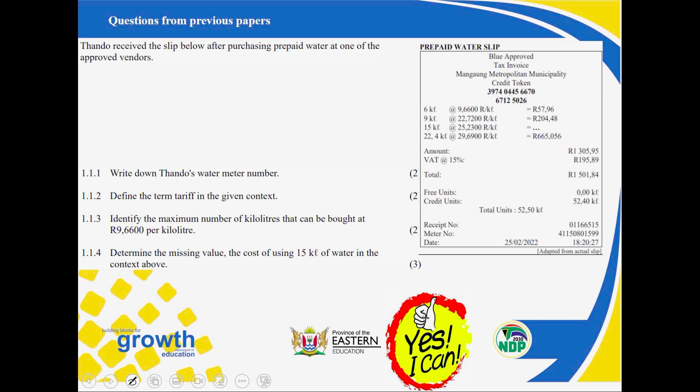Let us engage with this question. We are told to refer to the slip below, after purchasing prepaid. Prepaid — remember we defined prepaid as pay before use. We have a prepaid water slip, which I want us to study very carefully before answering the questions.